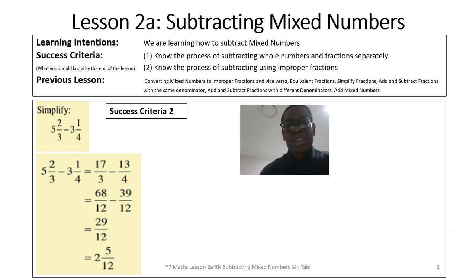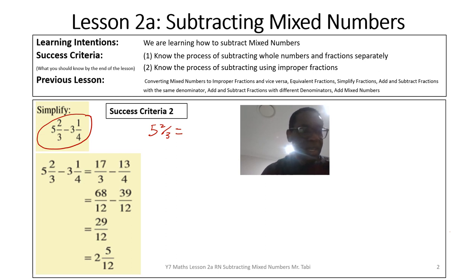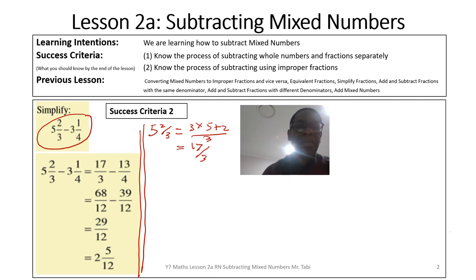Now we're using the second success criteria, which means we're going to convert our mixed numbers into improper fractions first and then subtract them. Taking five and two-thirds: that would be three times five plus two, divided by three, and that gives us seventeen over three.